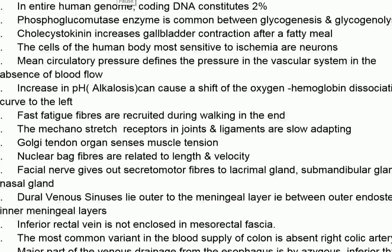Hello friends, this is part two of AIIMS important questions which have high probability of appearing in NEET PG. This video covers 100 one-liners. In the entire human genome, coding DNA constitutes only two percent. Phosphoglucomutase enzyme is common between glycogenesis and glycogenolysis.